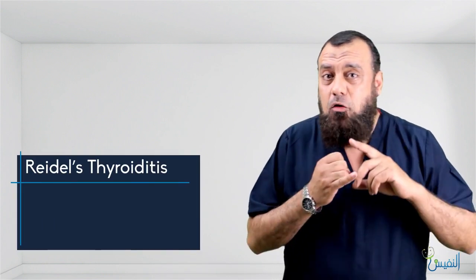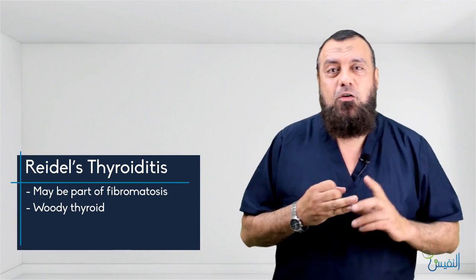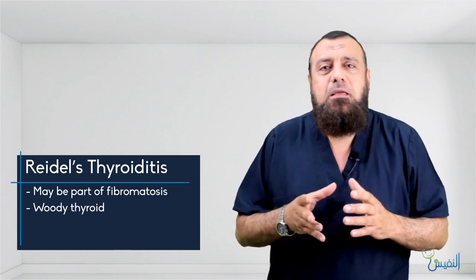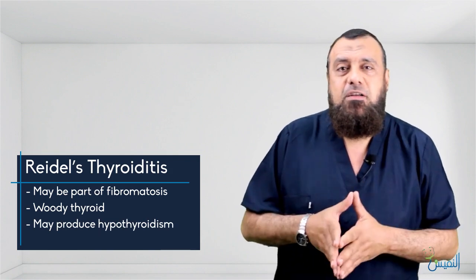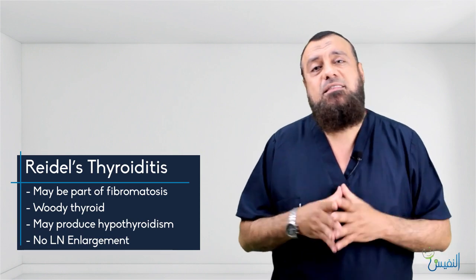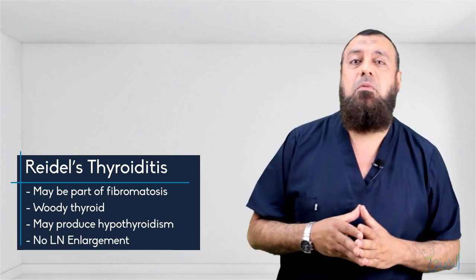So again, we can classify into acute, subacute, and chronic. Infection is present in all — acute, subacute, or chronic. In subacute, remember the viral form called de Quervain's and the mycobacterial. In the chronic form, don't forget Riedel's thyroiditis and autoimmune thyroiditis — which may be focal, Hashimoto's, or atrophic starting with hypothyroidism. Riedel's thyroiditis is a part of fibromatosis, results in woody thyroid enlargement, may present with hypothyroidism, there is no lymph node enlargement, and it is difficult to differentiate from malignancy except by biopsy.